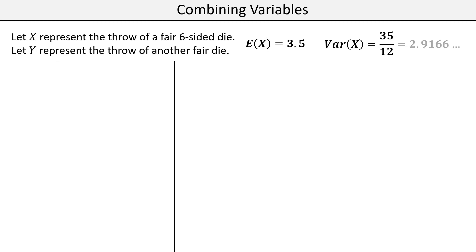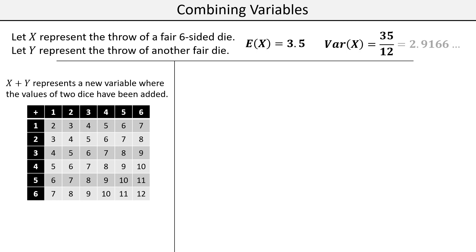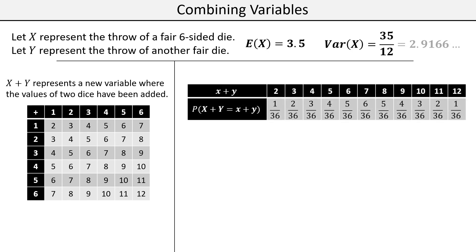With these starting points, let's think about what happens when we combine variables. If X is one fair six-sided die and Y is another fair six-sided die, adding the results gives X+Y. This sample space should be quite familiar — you've been producing it since Year 9. This sample space has its own probability distribution, showing all possible scores from adding two dice and their matching probabilities.